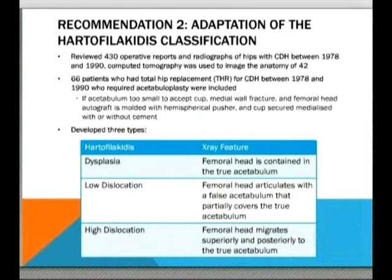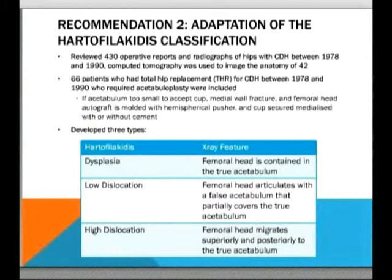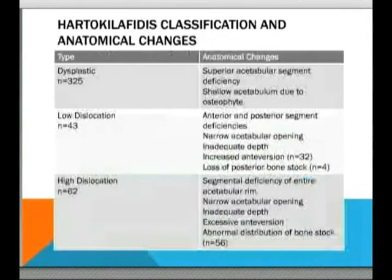When examining the x-rays, three patterns emerged. In dysplastic hips, the femoral head remained in the true acetabulum. In low dislocation, the femoral head was articulating with a false acetabulum that partially covered the true acetabulum. In high dislocation, the femoral head was well outside the true acetabulum and had migrated superiorly. These findings were correlated with anatomical changes seen in operative reports and on 3D CT reconstructions, which were then correlated to their radiographic categories.